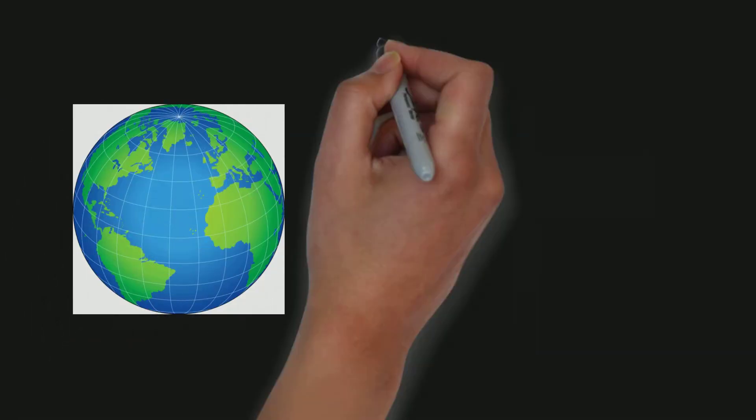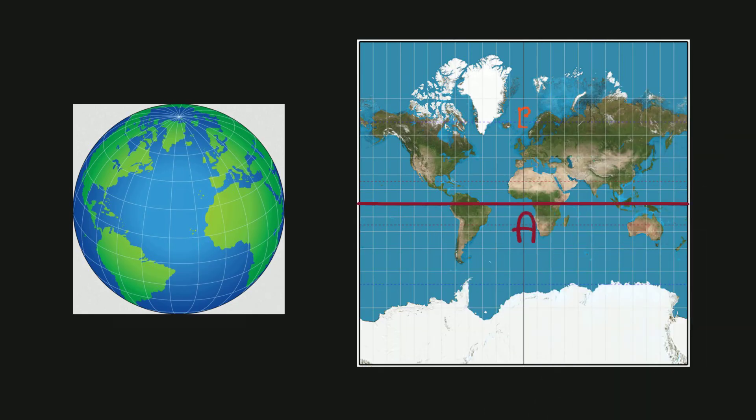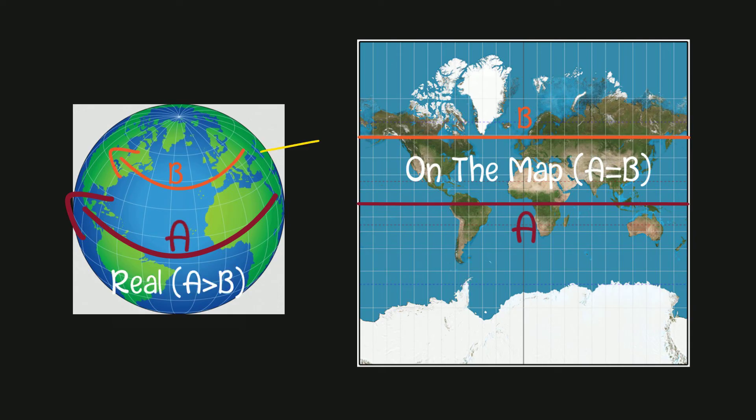This distortion occurs because on the map, lines A and B have the same length. However, on the Earth, line A is much longer than line B. This discrepancy happens because line B is much closer to the North Pole, causing areas near the poles to appear larger on the map.